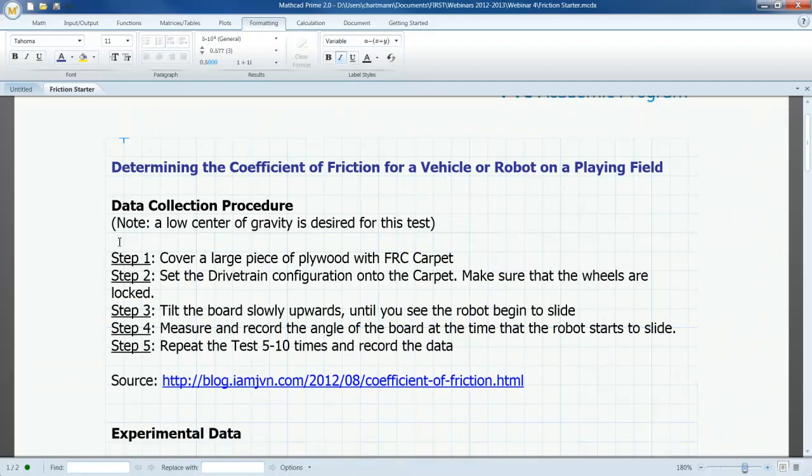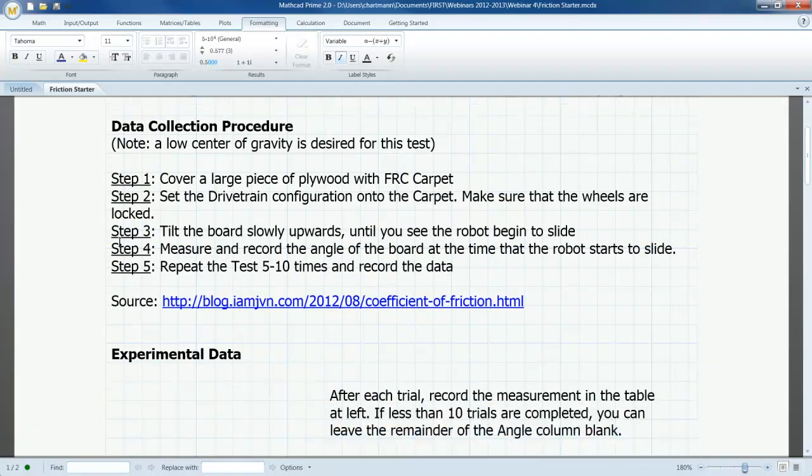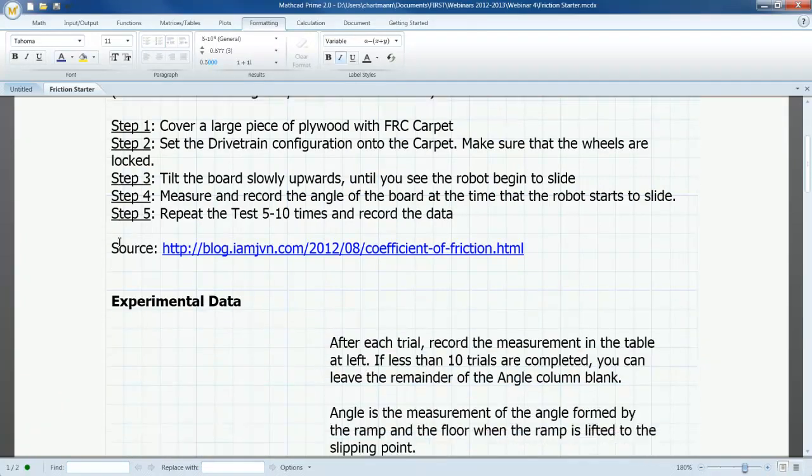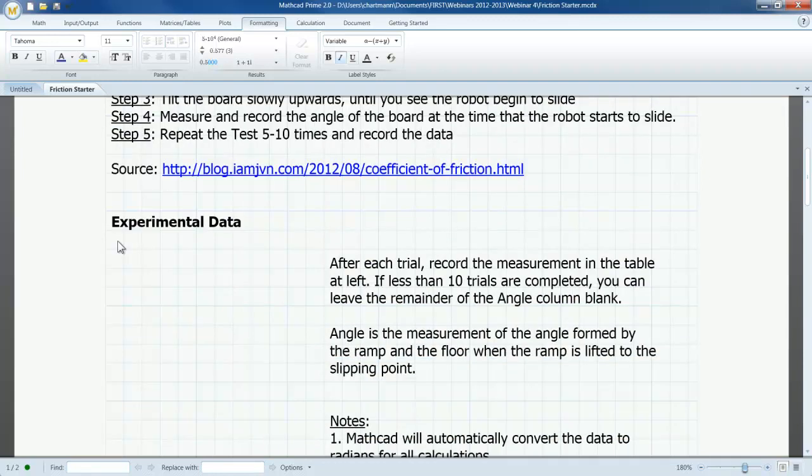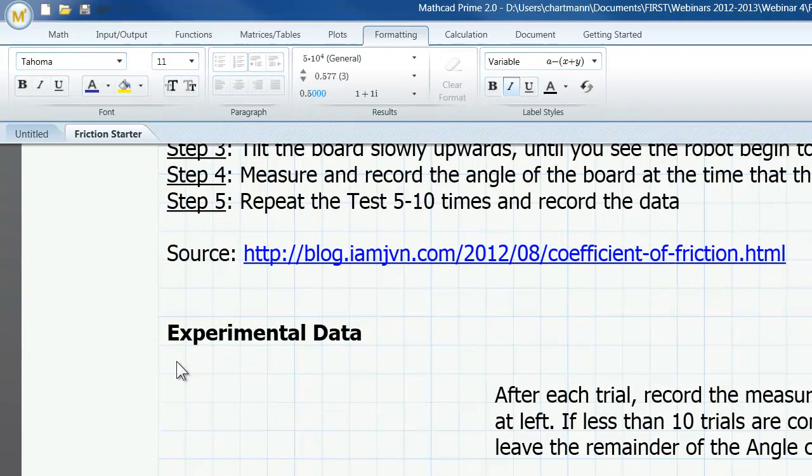As you can see, I have pre-populated my MathCAD worksheet with text blocks and text boxes portraying the context for my demonstration. Matrices are a powerful tool for handling data. MathCAD Prime allows me either to enter data directly into a matrix or to use an input structure called a table to create data column vectors. In this instance, I will use a table to enter the data from the repeated measurements of the angle at which the robot begins to slide.